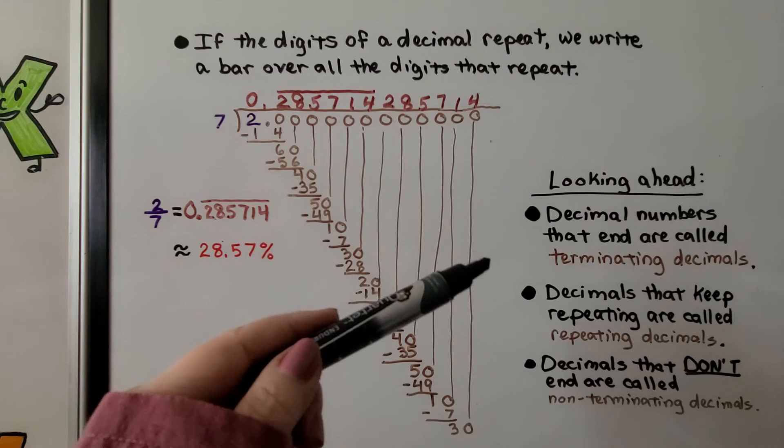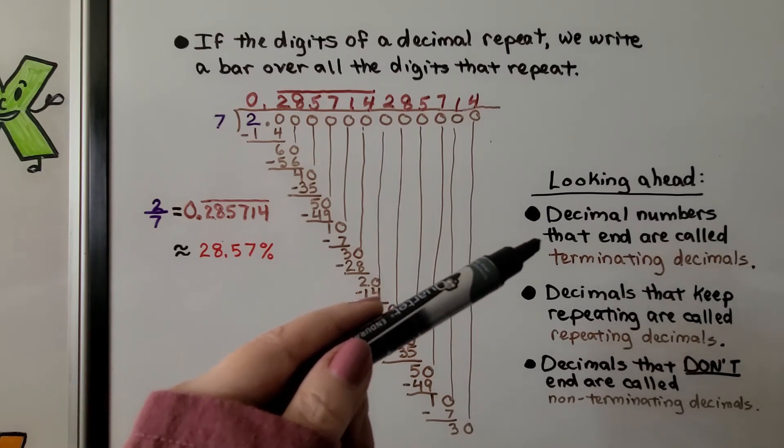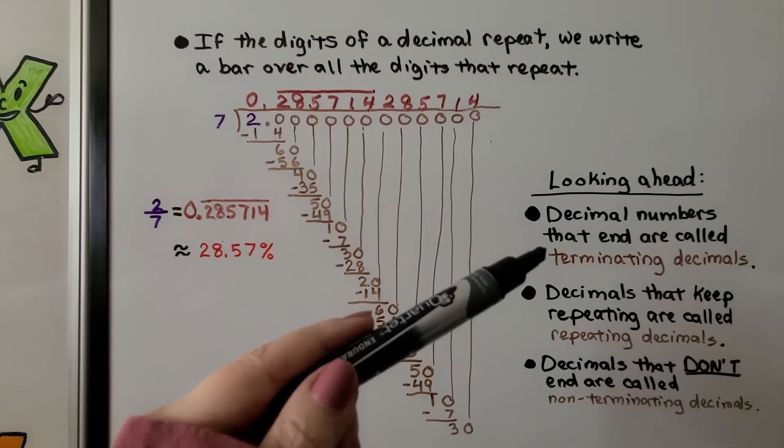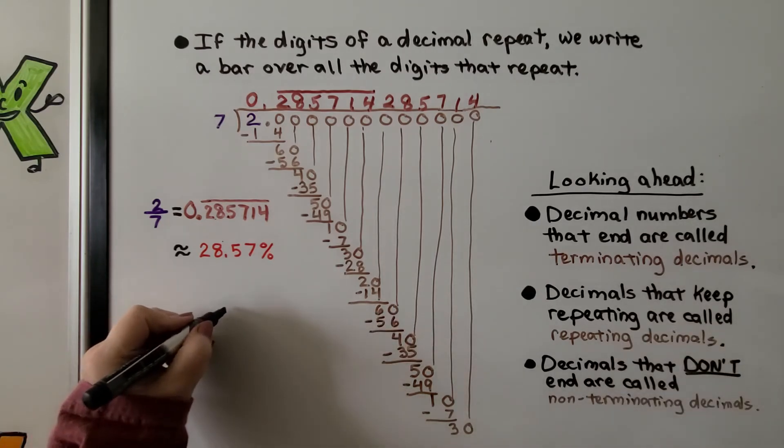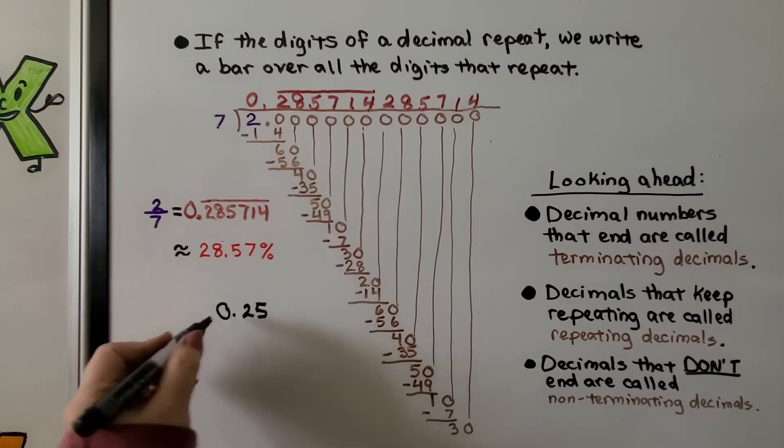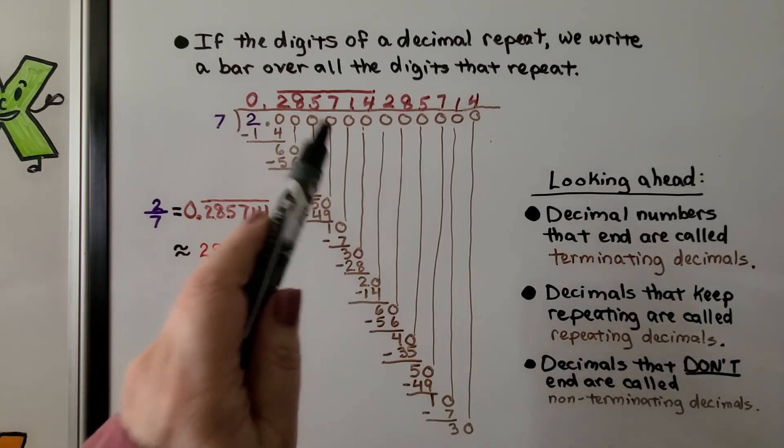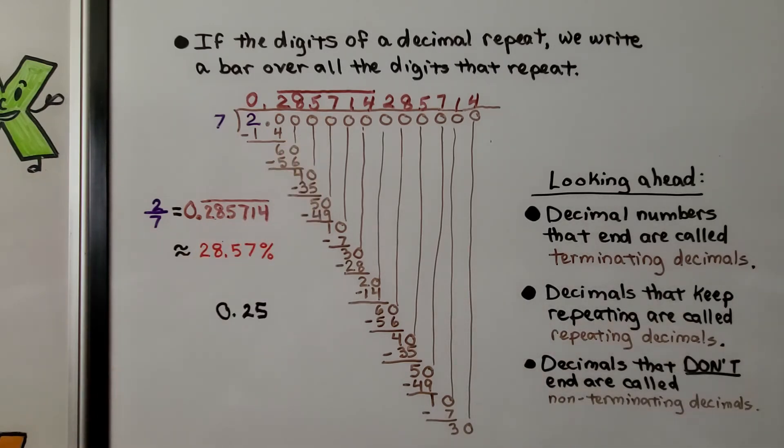Looking ahead to algebra, there's decimal numbers that end and they're called terminating decimals. Like we know one-fourth is 0.25. That's it. That's the end. It's just 25 hundredths. That's a terminating decimal. Then there's decimals that keep repeating. Those are repeating decimals. Then there's decimals that don't end. Those are called non-terminating decimals.